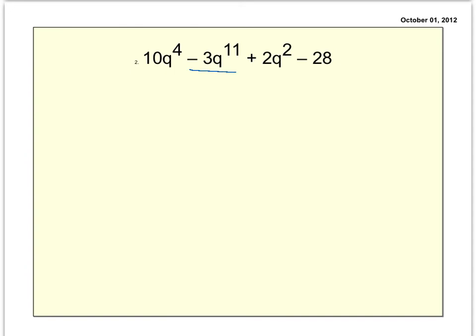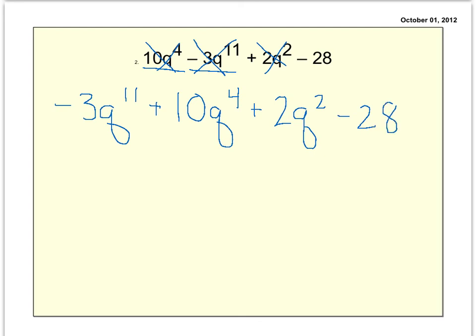Always pick the term with the highest exponent first. So we have negative 3q to the eleventh. Second would come the positive 10q to the fourth. Then a positive 2q squared. And finally finished up with the minus 28.